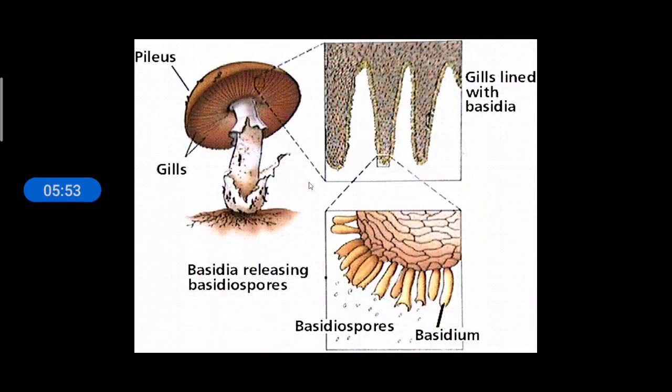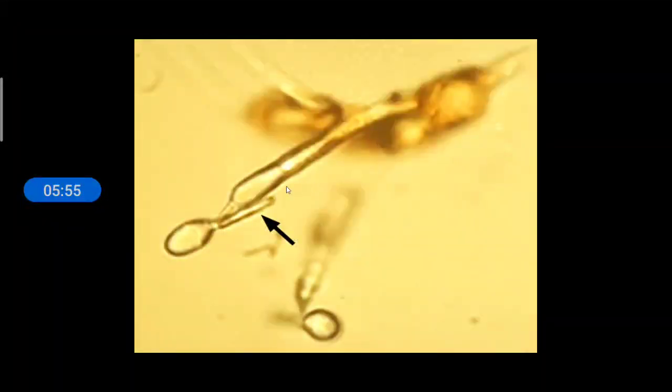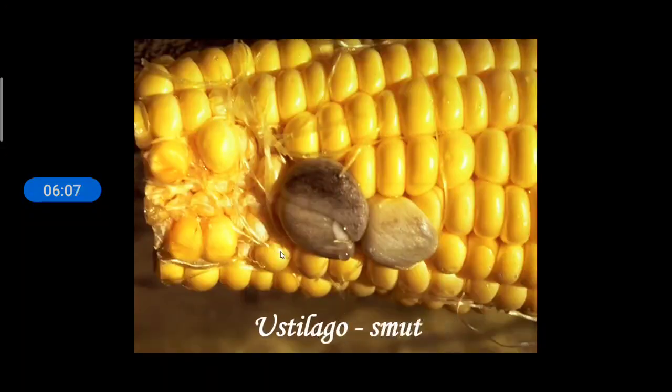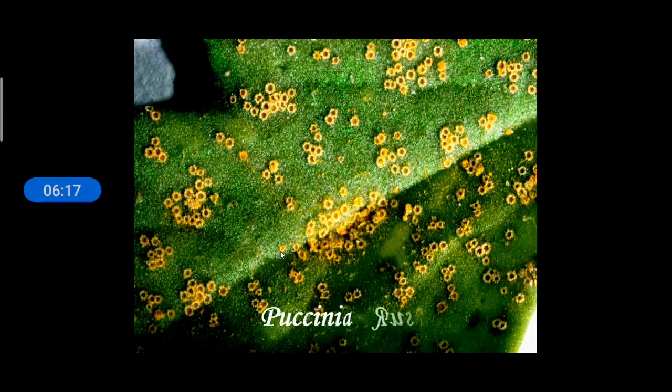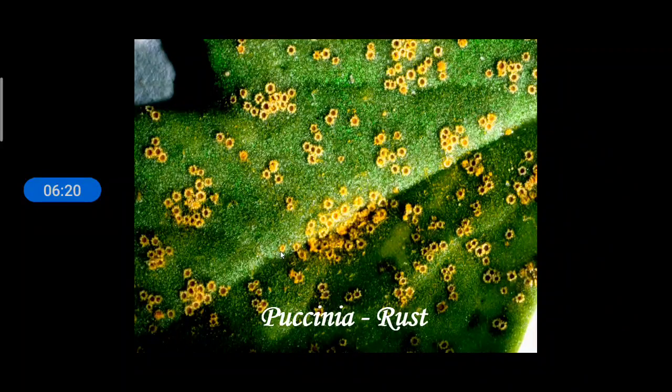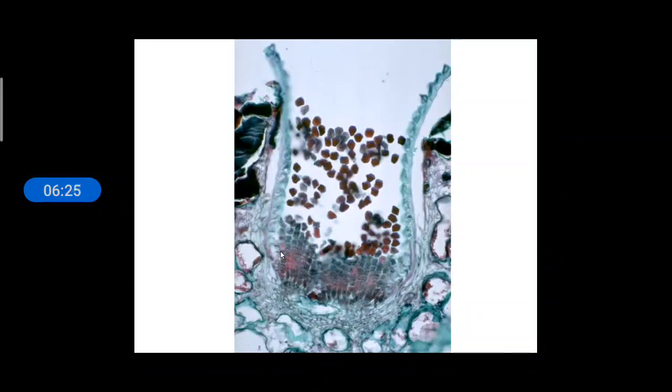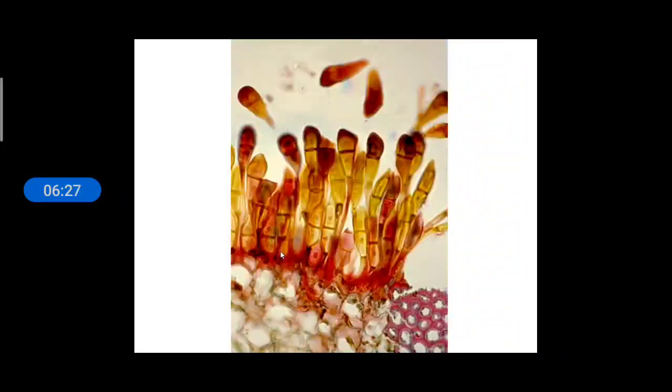This is another view. And you can see here a microscopic picture of a Basidiospore. Since it is formed after meiosis, it is haploid. And it is produced on structure called Basidium. It is exogenously produced. This is Ustilago called as Smut fungus. And this is Puccinia which is called as Rust fungus. And it has got another types of spores. And these are the spores. So this is about this group.